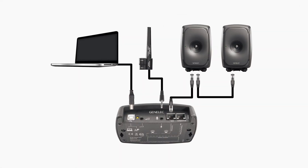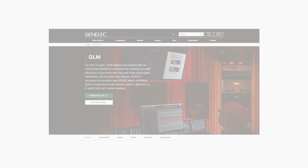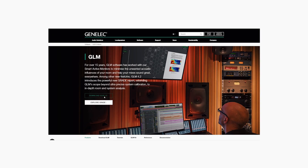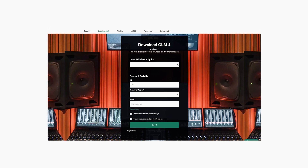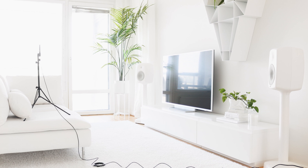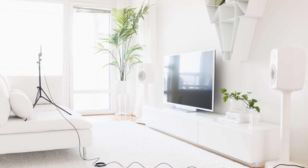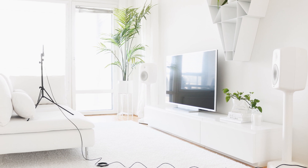The setup is quite easy. You connect all of your speakers and also subwoofers, if you have any, to the network adapter with standard CAT network cables. The network adapter is connected to your PC or Mac. Download the GLM software from our website and you are almost ready. The final step is to place the measuring microphone at your listening position and connect it to the network adapter.